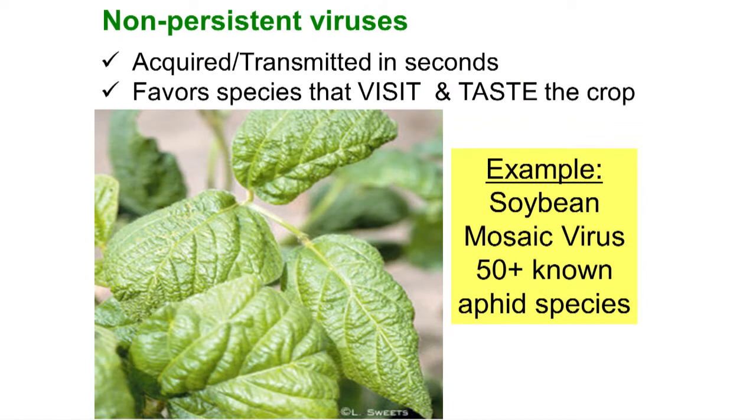One of the most important types of viruses are non-persistent viruses. They're called non-persistent because they don't persist very long in the vector — they're acquired and transmitted in seconds. Let's say I'm an aphid: I come up to an infected plant, I probe my mouthpart in, sap sample just a little bit, suck a little sap in, and think — this isn't soybean, this is potato — and I move to another plant. Those viruses are acquired very quickly, and by the same token, they're flushed back into the plant very quickly. So they're acquired and transmitted in seconds, maybe a few minutes.